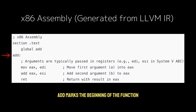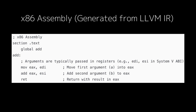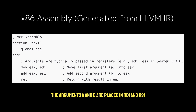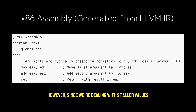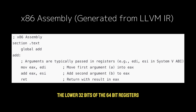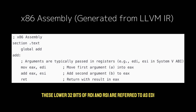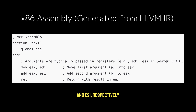`add` marks the beginning of the function. To understand the next two lines, we need to understand the x86-64 calling convention. When you write a C function like `add`, the arguments A and B are placed in RDI and RSI respectively. In x86-64, which is 64-bit architecture, registers like RDI and RSI are 64 bits wide. However, since we're dealing with 32-bit integers, the lower 32 bits of those registers — referred to as EDI and ESI — hold the actual values.